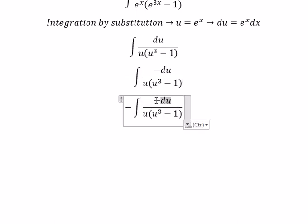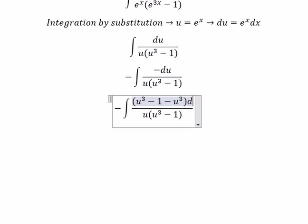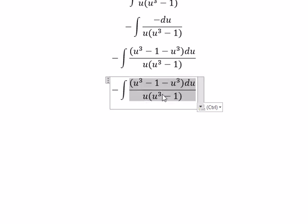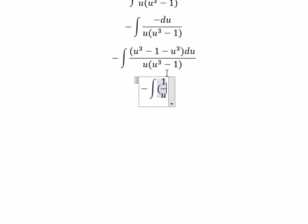Next we got u to the power of 3 minus 1. So we need to minus u to the power of 3 du. u to the power of 3 minus 1 divided by u to the power of 3 minus 1. You got 1, and u squared over u to the power of 3 minus 1 du.